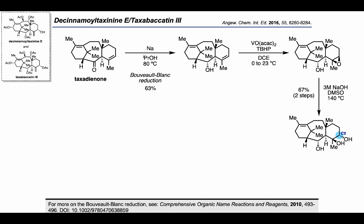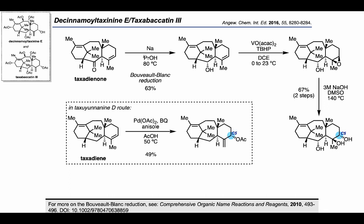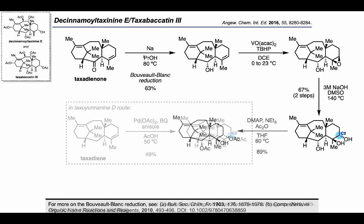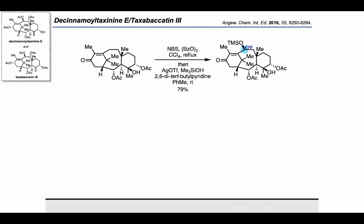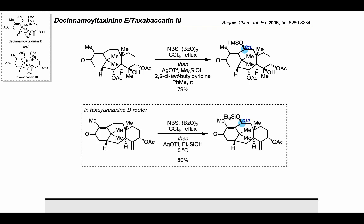The authors found that with vanadium-catalyzed epoxidation followed by treatment with sodium hydroxide and DMSO at 140 °C, they could successfully install the desired carbon-oxygen bond at C5 — in contrast to the palladium acetate/benzoquinone approach used in the taxaunanine D route, where the secondary alcohol was causing an undesired side reaction. They were then able to acetylate both secondary alcohols in good yield. They then applied the same chromium(V) oxidation as before to install the carbon-oxygen bond on the leftmost cyclohexane, though formation of the desired product was accompanied by an undesired allylic alcohol byproduct. Taking advantage of knowledge from the taxaunanine D synthesis, the authors treated their enone intermediate with N-bromosuccinimide and benzoyl peroxide followed by silver triflate and a silanol nucleophile, and unlike the earlier palladium acetate oxidation, this strategy translated fairly well from the taxaunanine D route to the present system.